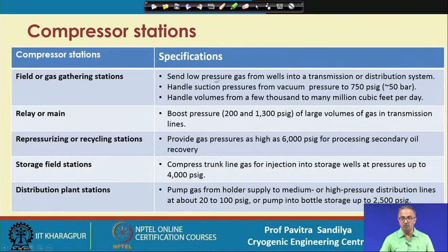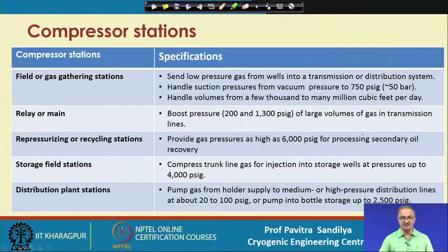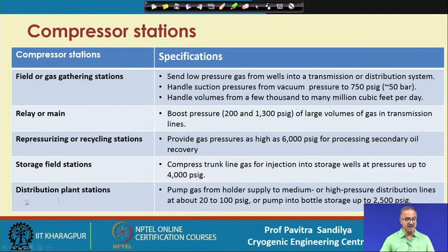For fluid gas stations, they send low pressure gas from wells into transmission or distribution lines at about 750 psig or 50 bar g, handling volumes from a few thousand to many million cubic feet per day. Relay stations boost pressure from about 200 to 1300 psig for large volumes of gas in transmission lines. Repressurizing stations provide gas pressure as high as 6000 psig for processing and secondary oil recovery. Storage fuel stations compress trunk line gas for injection into storage wells at pressures up to 4000 psig. Distribution plant stations pump gas from holder supply to medium or high pressure distribution lines at about 20 to 100 psig, and up to 2500 psig for storage.